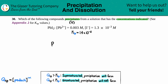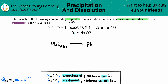We need a balanced equation: PbI₂ (solid) comes to equilibrium — double arrow — Pb²⁺ (aqueous) plus I⁻ (aqueous). Since there are two iodines, I need to put a coefficient of 2 in front of I⁻ to balance the equation.